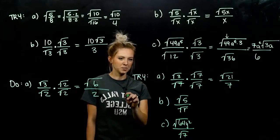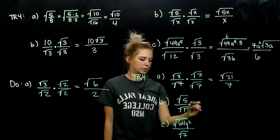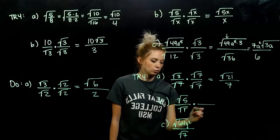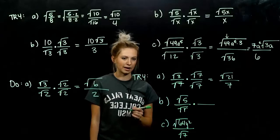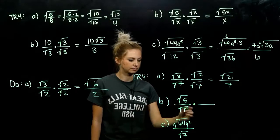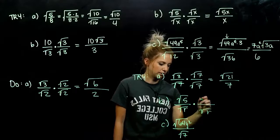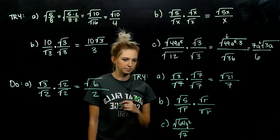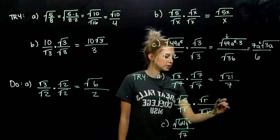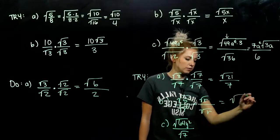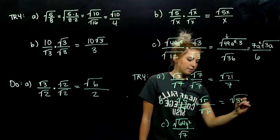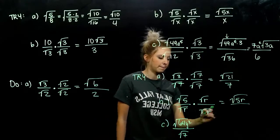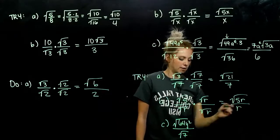Part B: what do we need to multiply root r by? Itself — root r. Root r up top as well. So we're looking at the square root of 5r all over r.